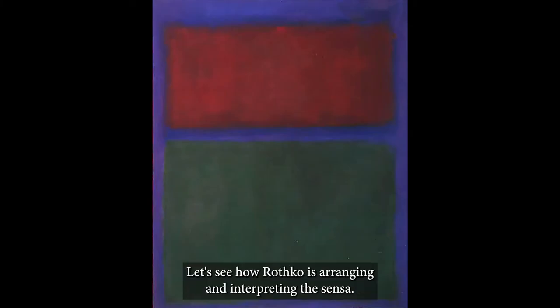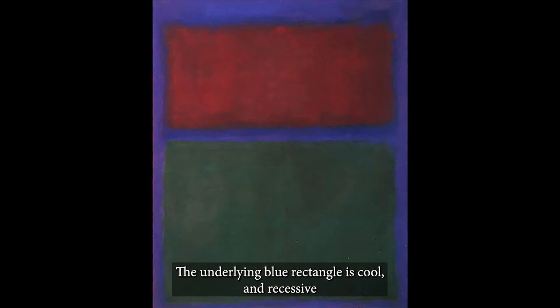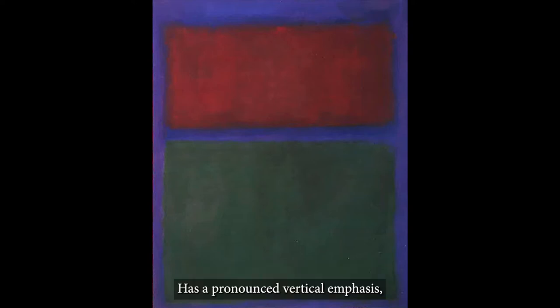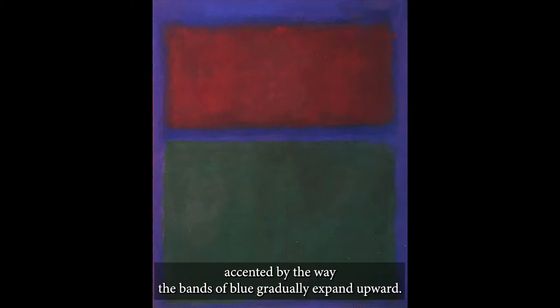Let's analyze the form. Let's see how Rothko is arranging and interpreting the sensa. The underlying blue rectangle is cool and recessive, tends to stay in the background, as blue often tends to do. There's a pronounced vertical emphasis accented by the way the bands of blue gradually expand upward.